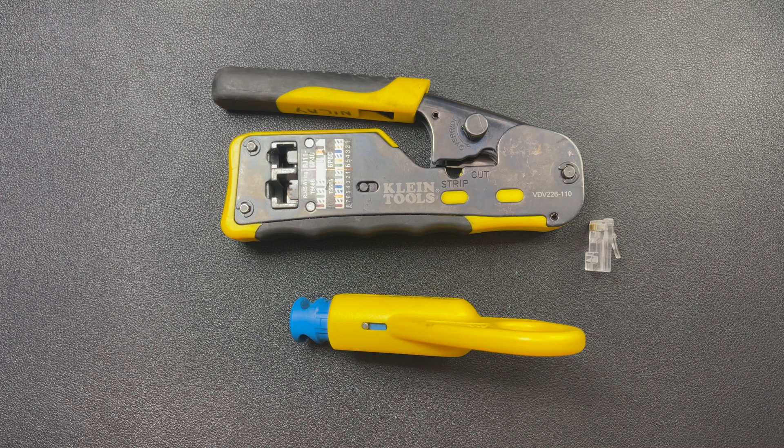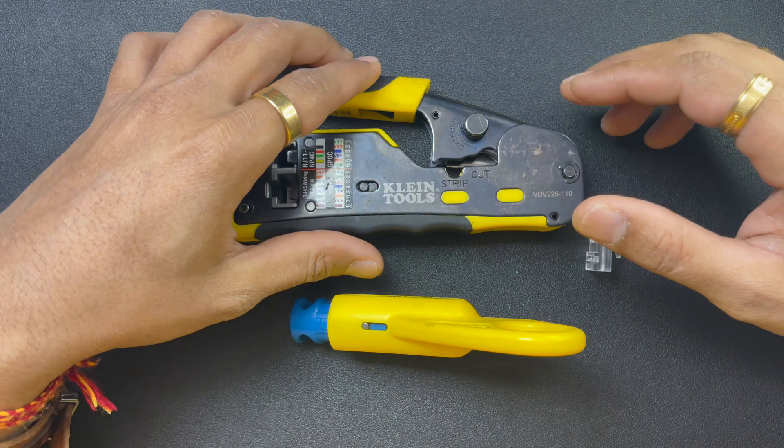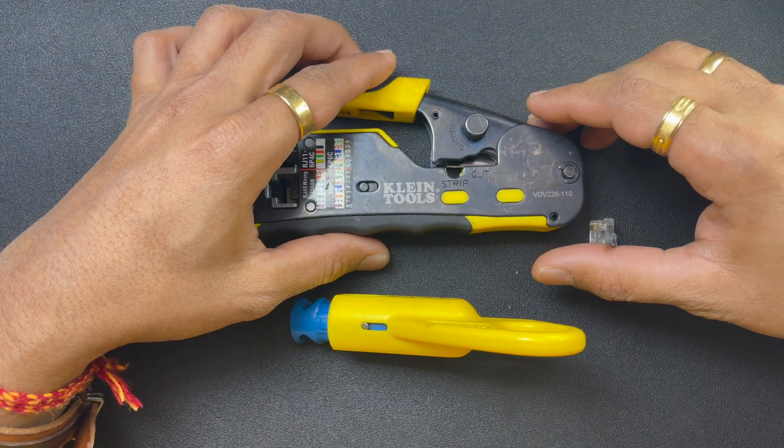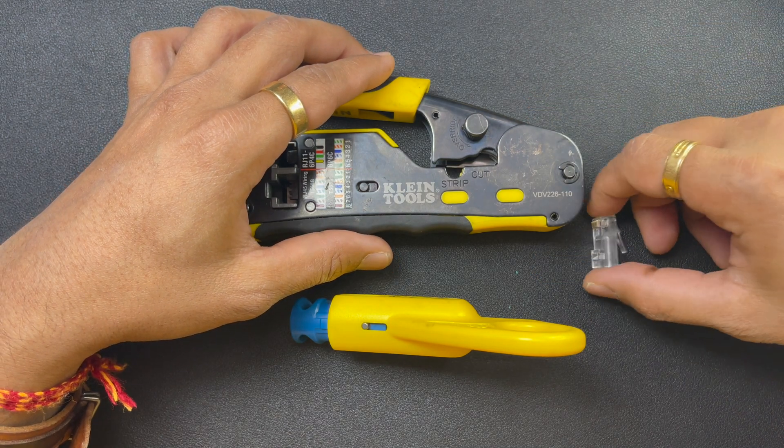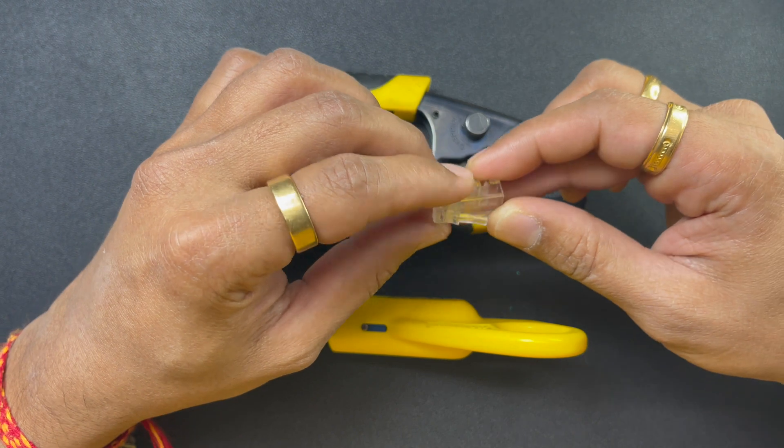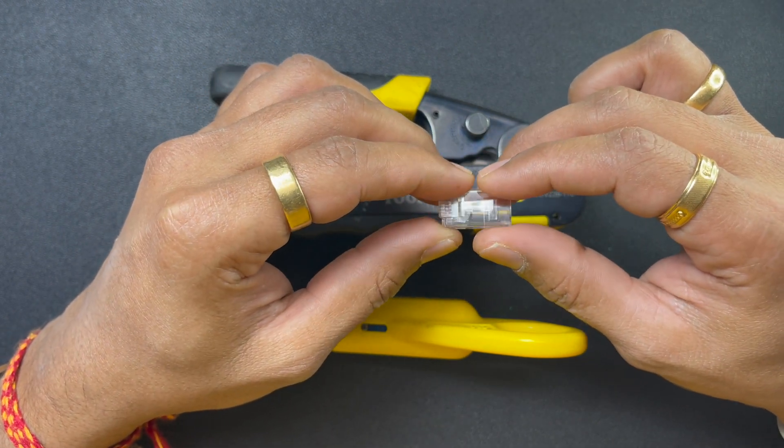Hello everyone, welcome back to my YouTube channel Cable and Tech. In this video, I'm going to show you how to terminate Cat6 cable with RJ45 pass-through plugs. You can buy these pass-through plugs on Amazon and they're not that costly - I bought a box of 100 pieces for about 20 bucks.